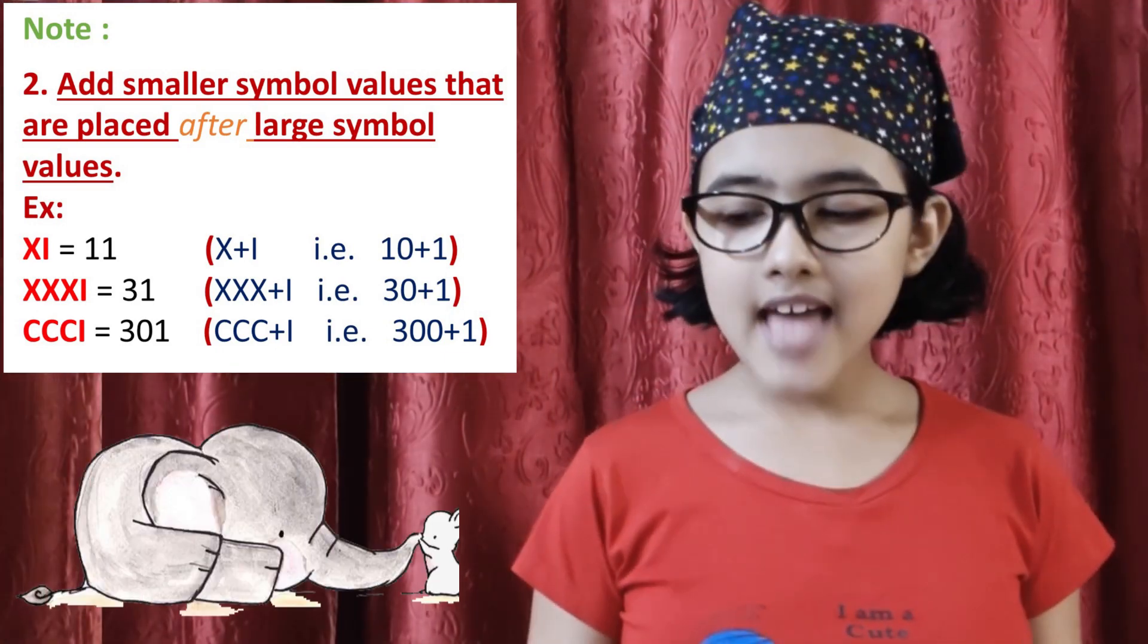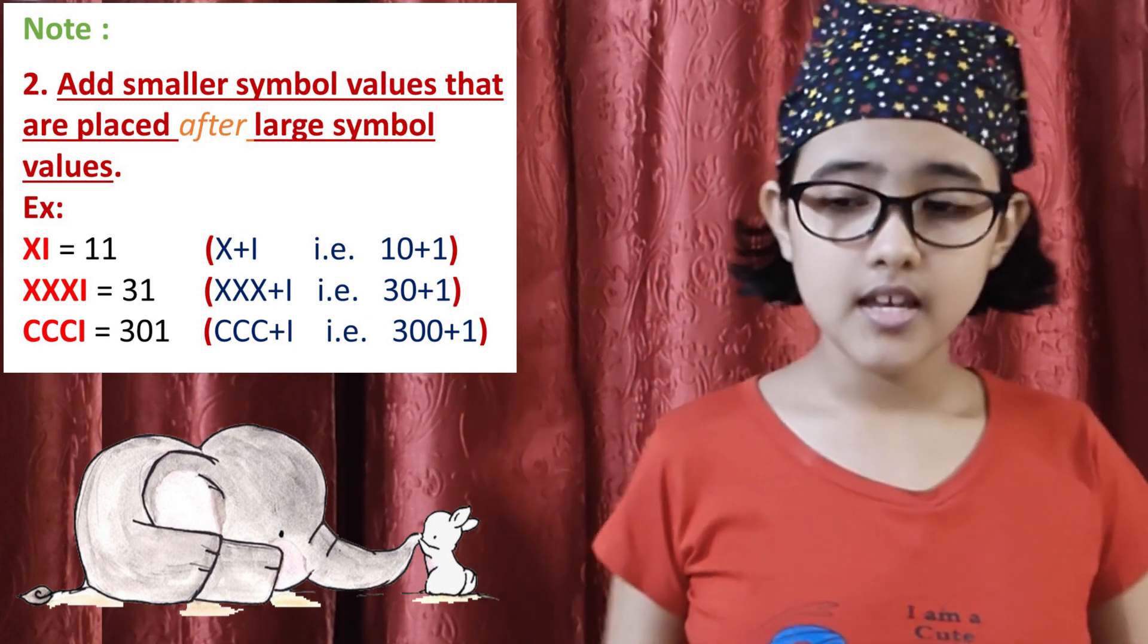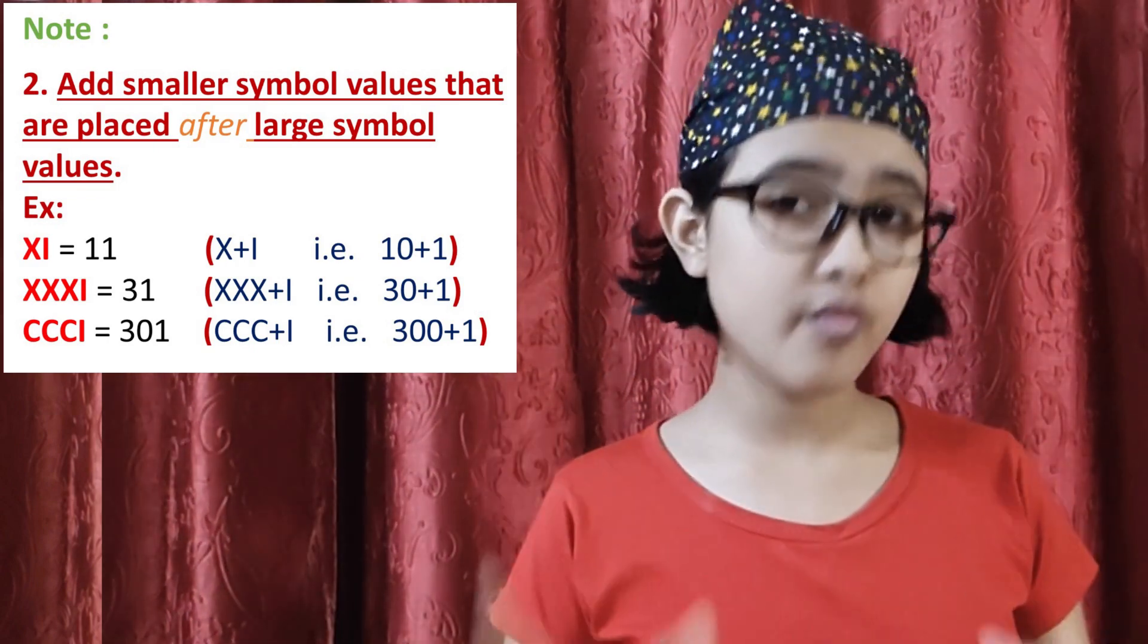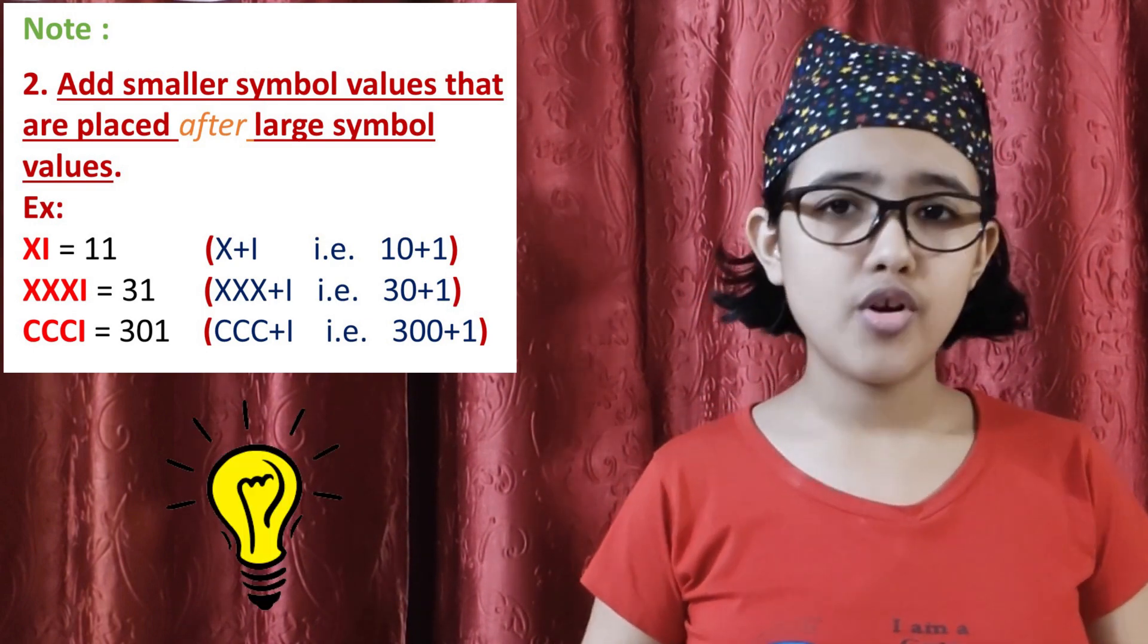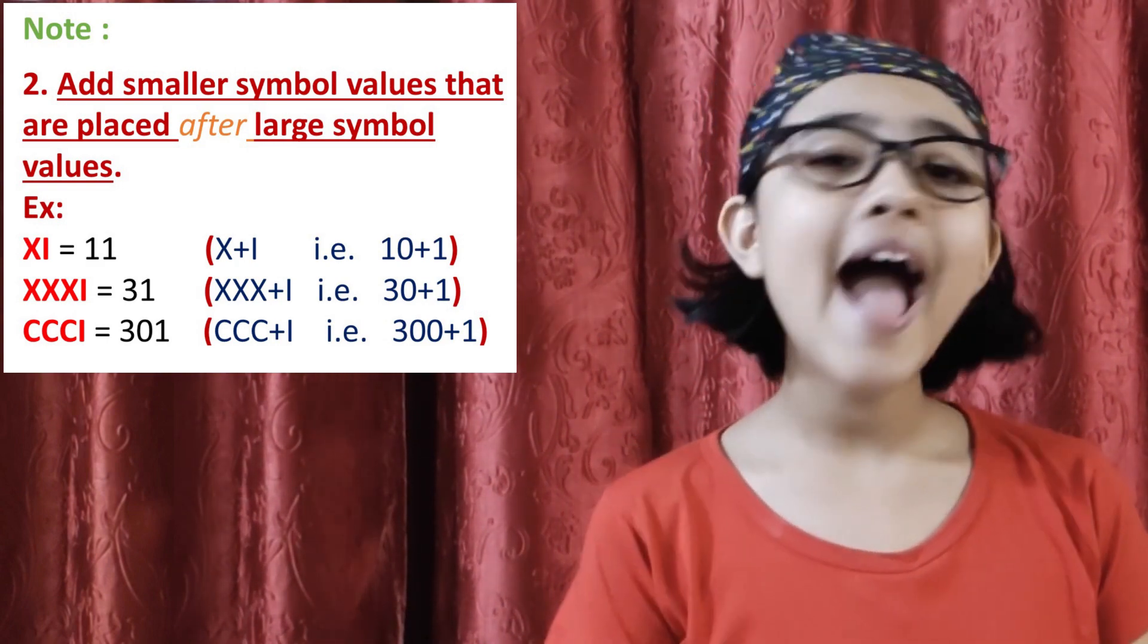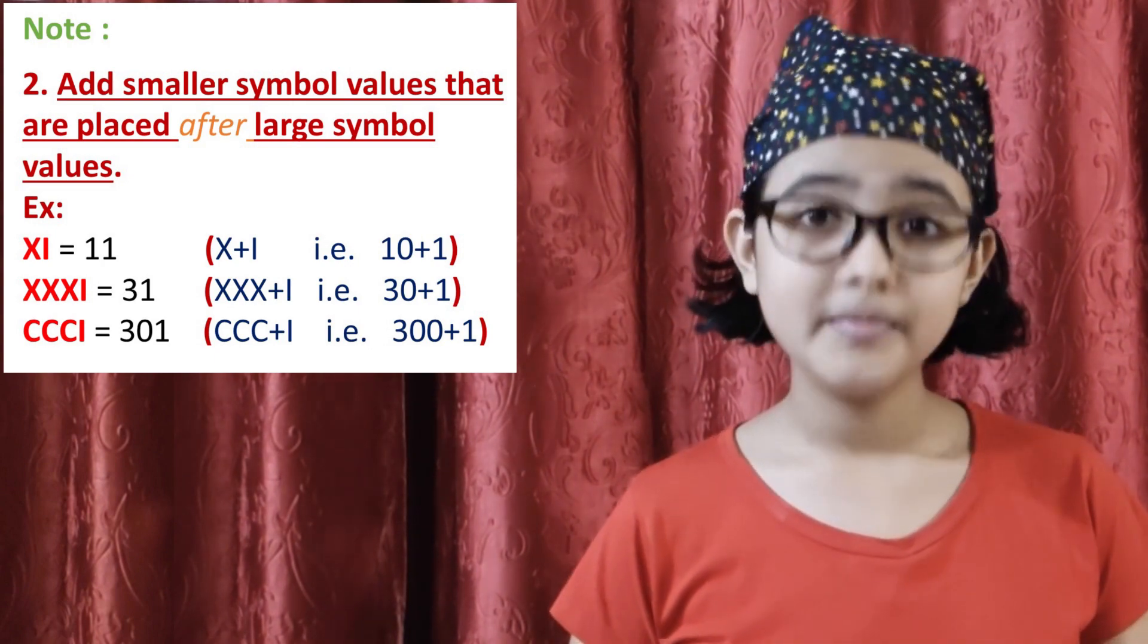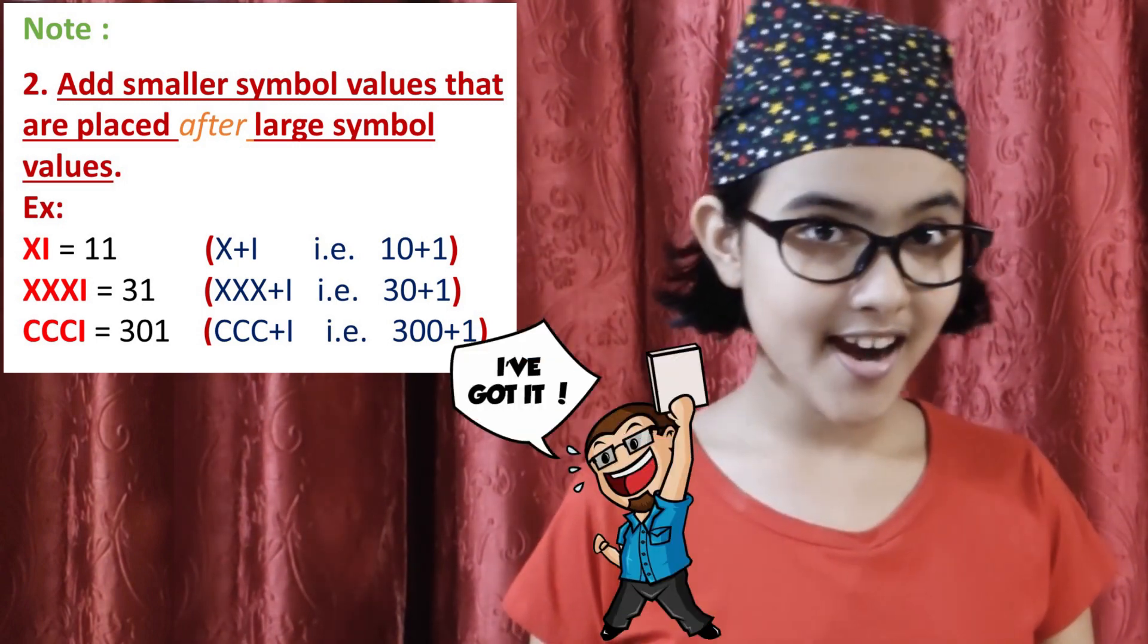The second rule is: add smaller values that are placed after large symbol values. You can also place them before if you want a lesser number than a round one. And if you want more, then you must place them after the greater number. Let's take the example of 11 and 9. What's the round number closest to 11? It is 10, the closest round number to both 11 and 9. X plus I can be 11. 10 plus 1 is 11. So, as we're adding it, we put the I after X.